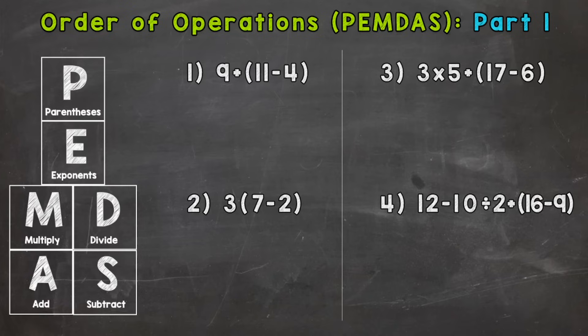So let's hop into number one. We have nine plus eleven minus four in parentheses. So how do you go about doing these problems is we take a look at our chart over here and we have parentheses up top. That means it's number one priority. If you see parentheses in a math problem that's what you do first. So let's do eleven minus four first for number one.